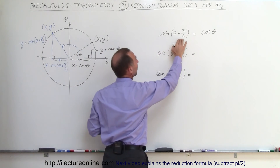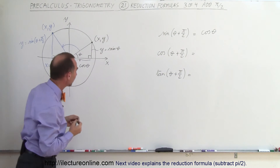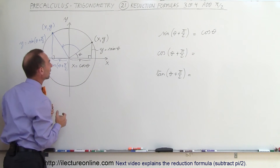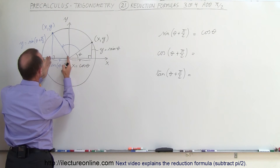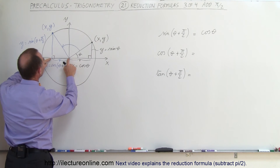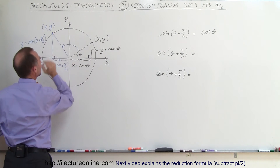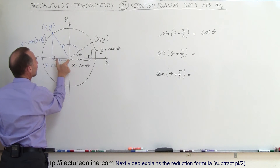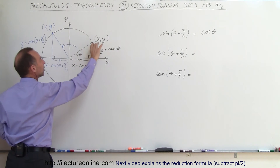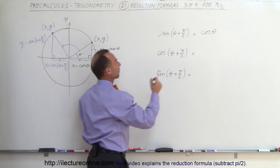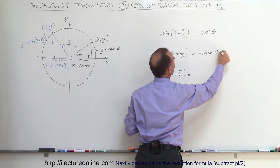So the sine of theta plus pi over 2 can be written as the cosine of theta. What about the cosine of theta plus pi over 2? That's this value here, and in size it's equal to this value there because those two triangles are equal — but it's on the negative side, so it becomes the negative of the sine of theta.